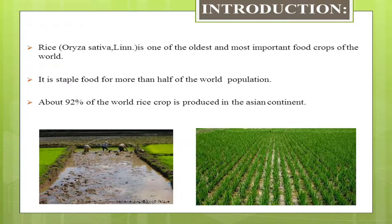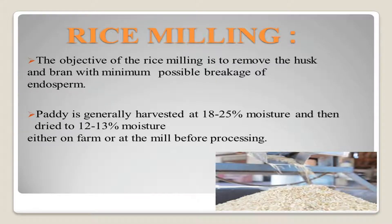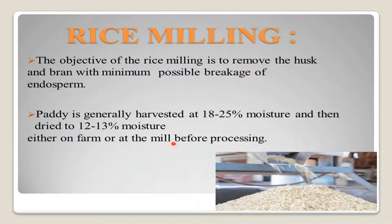Now we are moving to rice milling. The objective of rice milling is to remove the husk and bran with minimum possible breakage of endosperm. Paddy is generally harvested at 18 to 25% moisture content and then dried to 12 to 13% moisture content, either on farm or at the mill before processing.